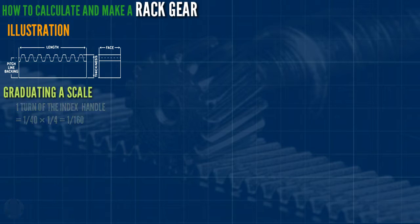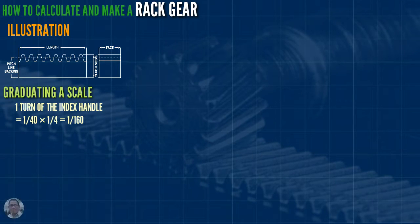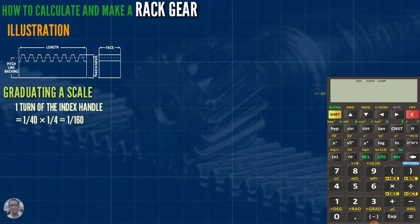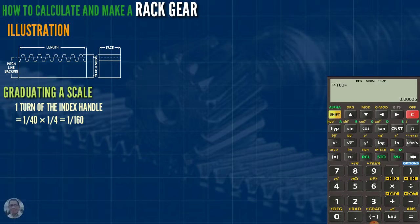One turn of the index handle equals one divided by forty times one-fourth. So one times one equals one, and forty times four equals one hundred sixty. Using the calculator: one divided by one hundred sixty equals zero point zero zero six two five inches.